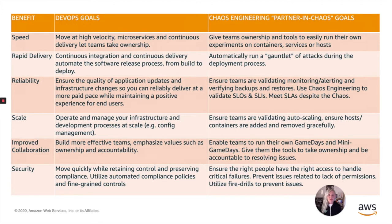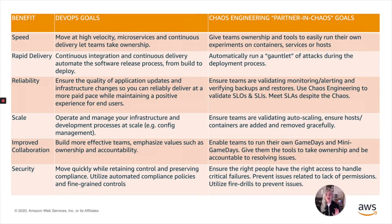If one of our benefits is rapid delivery, then a chaos engineering goal would be to automatically run a gauntlet of attacks during the deployment process — which is what we're going to do today. I'll actually show you a demo of how you can build that out with Gremlin, Jenkins, CodeBuild, and CodeDeploy on AWS. For reliability, some really important use cases are around monitoring and alerting. You can ensure teams are validating their monitoring and alerting using chaos engineering, verifying backups, restores, and other critical processes. You can also validate SLOs and SLIs, and meet SLAs despite the chaos that naturally happens in systems — it helps you learn how to gracefully handle failure.